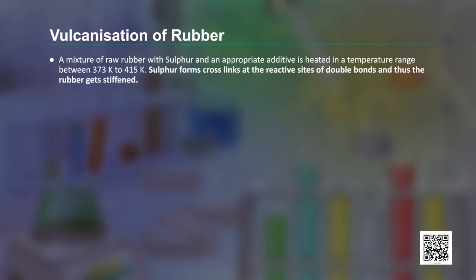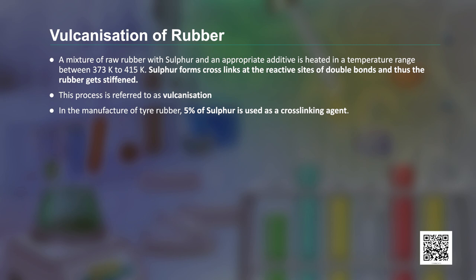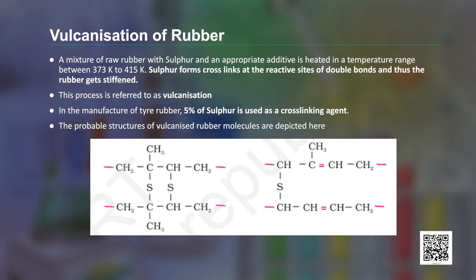These properties can be improved by adding a cross-linking agent. A mixture of raw rubber with sulphur and an appropriate additive is heated in a temperature range between 373 Kelvin to 415 Kelvin. Sulphur forms cross-links at the reactive sites of double bonds and thus the rubber gets stiffened. This process is referred to as vulcanization of rubber. During manufacture of tyres, 5% sulphur is used as the cross-linking agent.